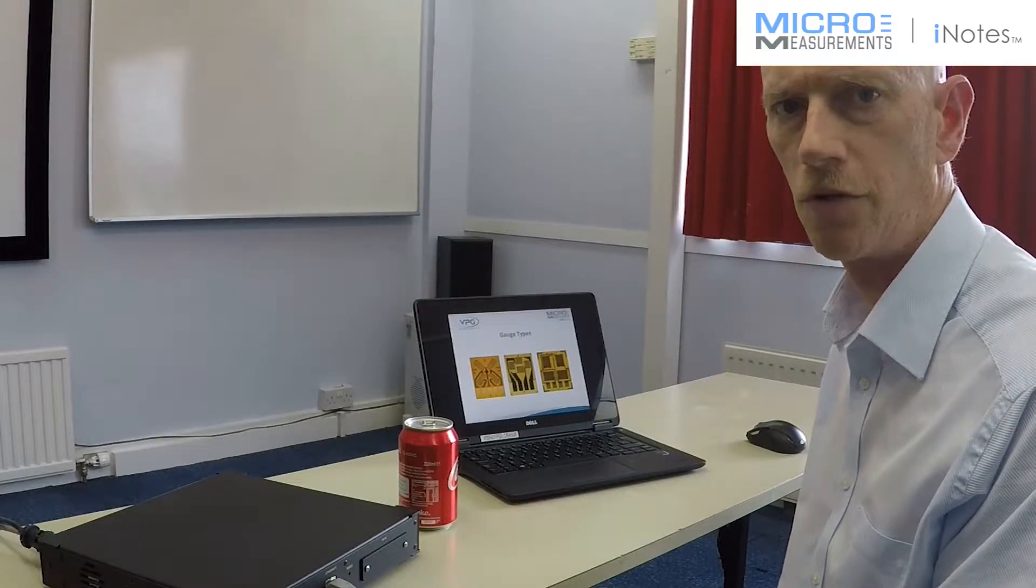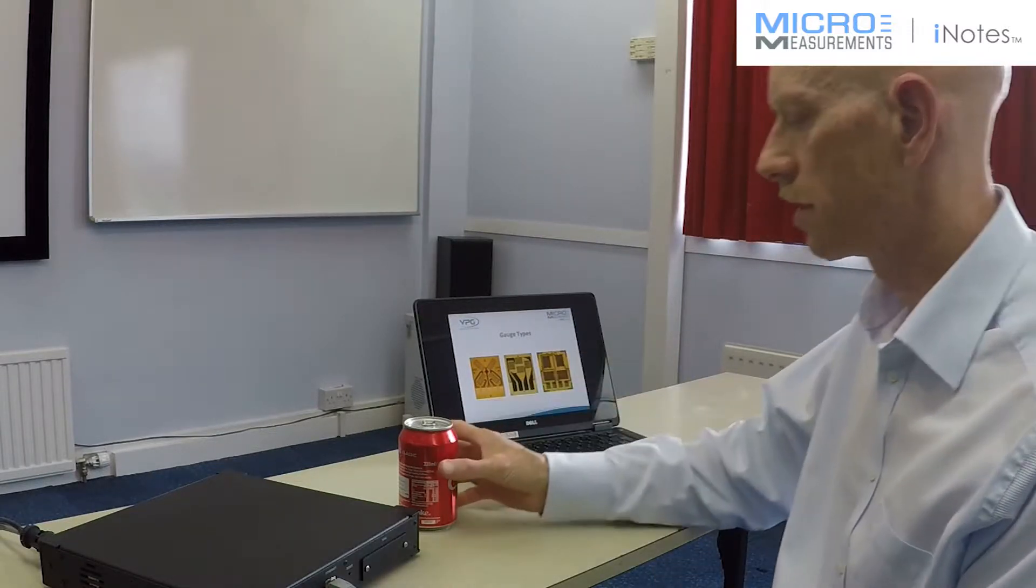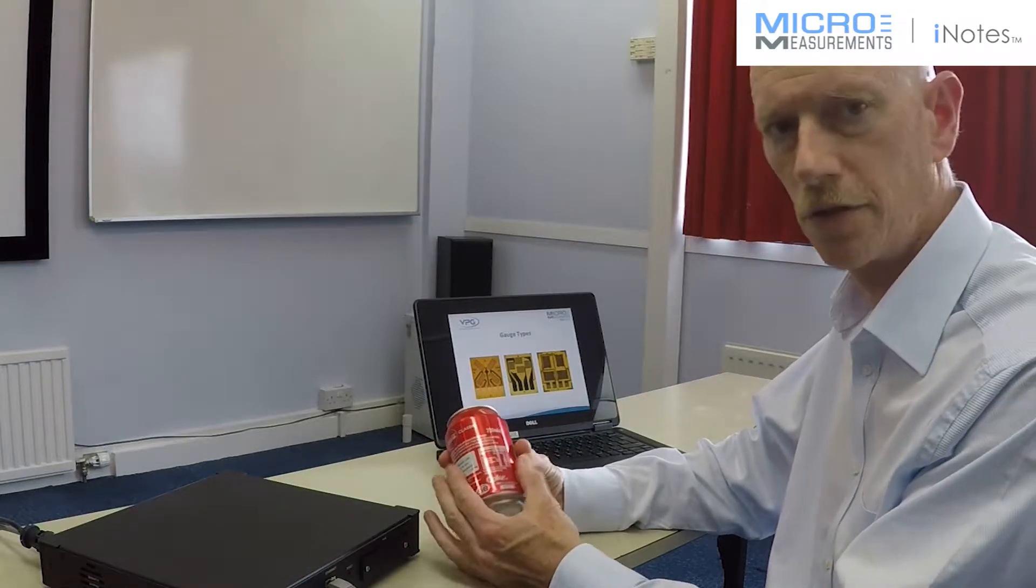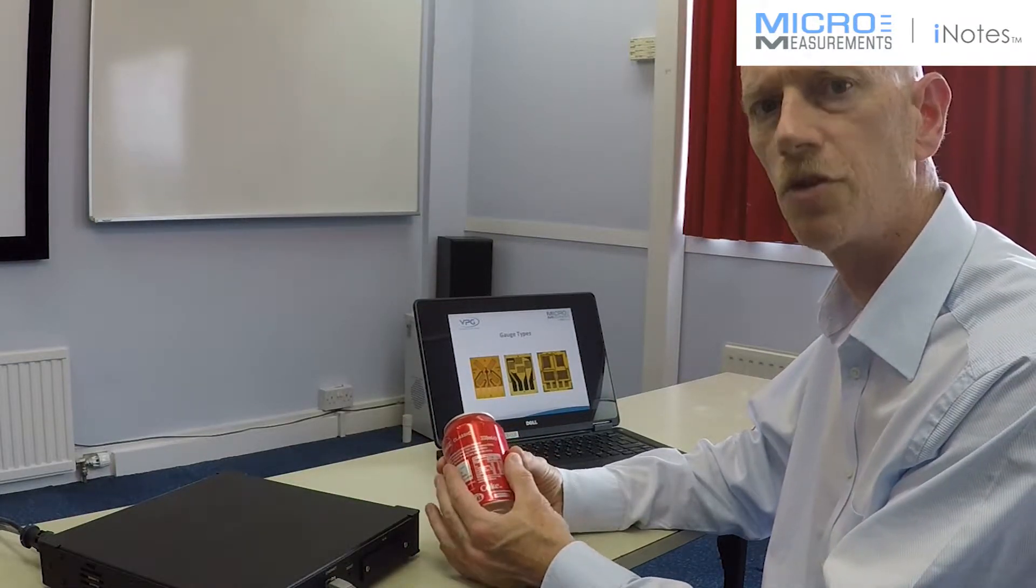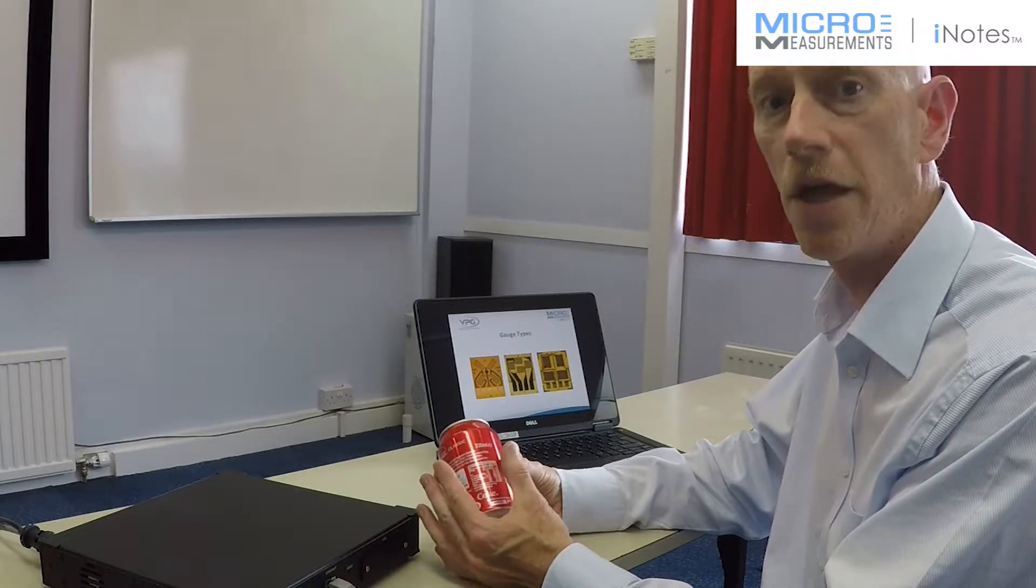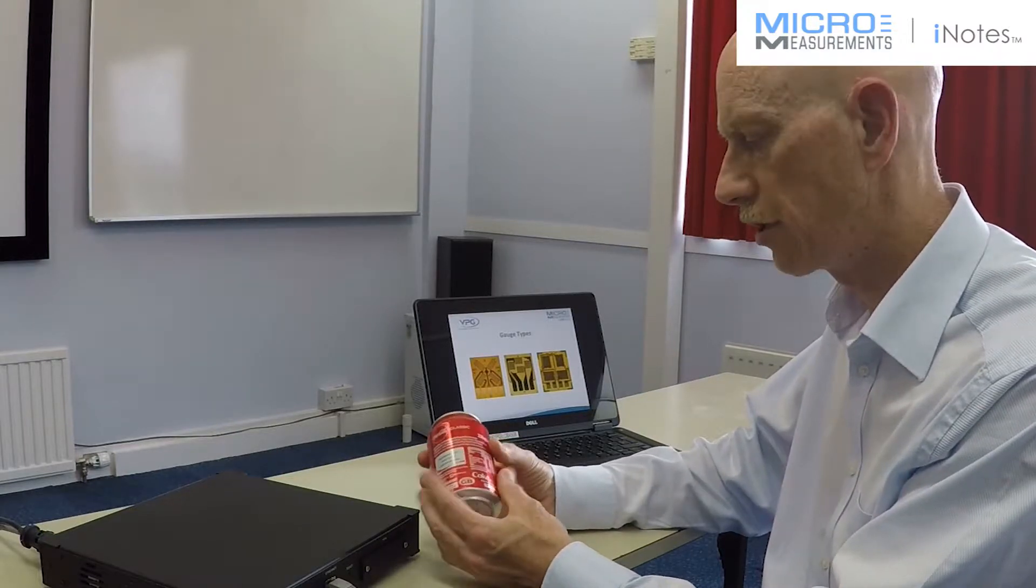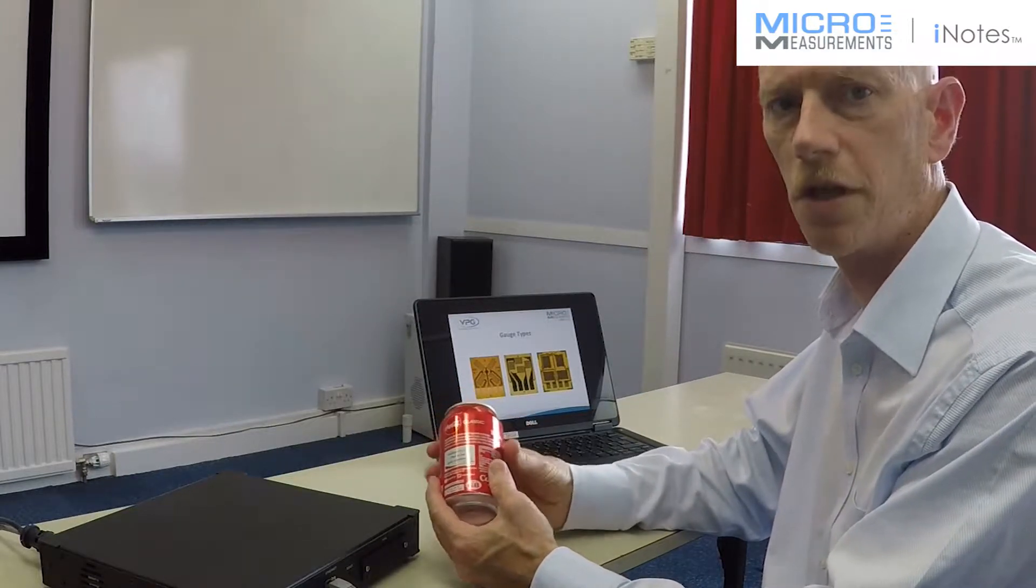We're actually going to short two of those when we come to lead wire attachment for a very simple installation. So, the first step is we're going to take one of those gauges and we're going to mount it onto this Coke can. And I'm going to demonstrate the process of surface prep, of wiring and then of calibration using our System 8000 and StrainSmart software. So, let's get to it. Let's get a strain gauge on this Coke can.